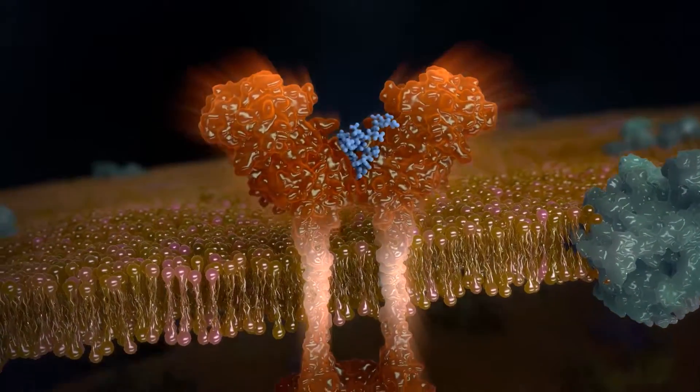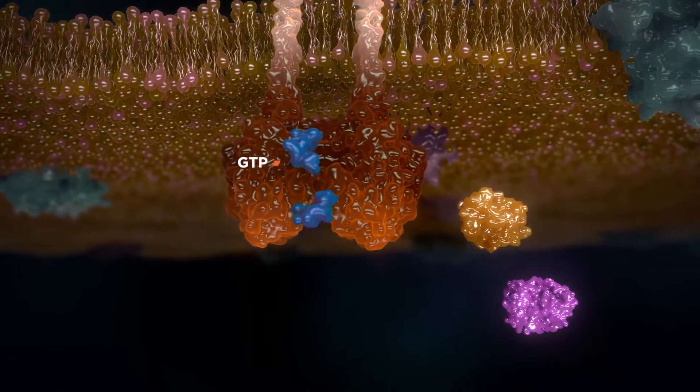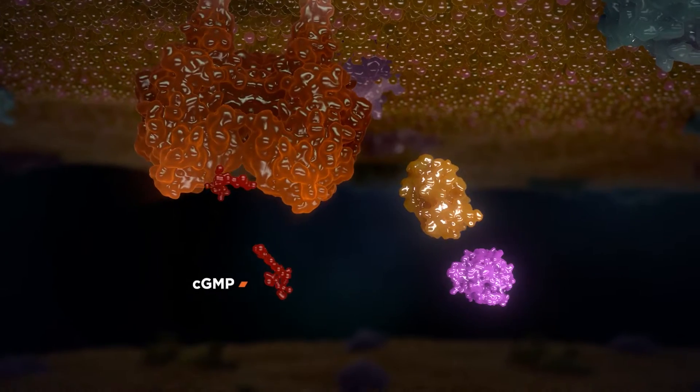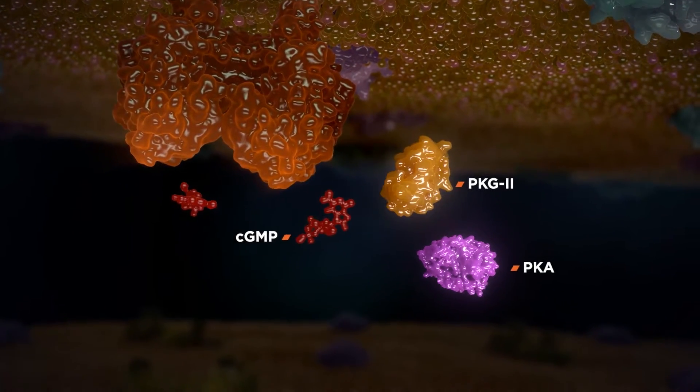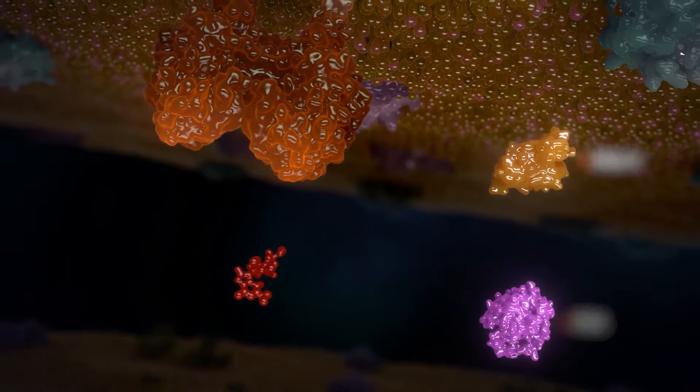Activation of the GCC receptor leads to increased intracellular concentrations of cyclic guanosine monophosphate or cyclic GMP. Elevated intracellular cyclic GMP activates cyclic GMP and cyclic AMP-dependent protein kinases.